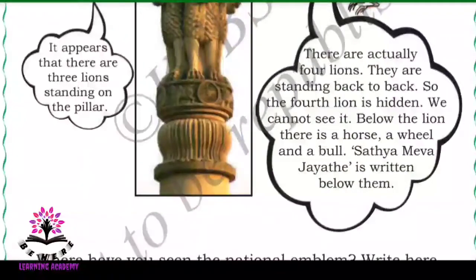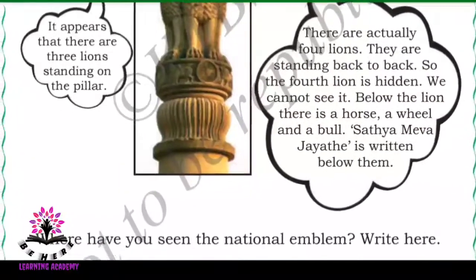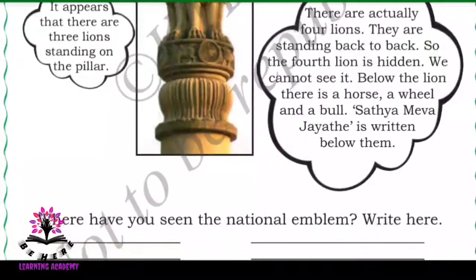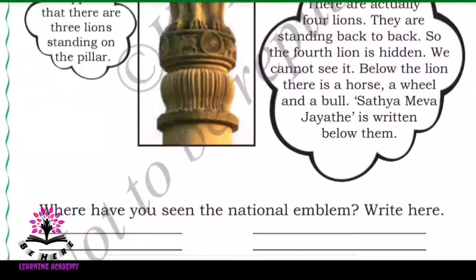We cannot see the fourth lion. Below the lions there is a horse, a wheel, and a bull. Satyameva Jayate is written below them.